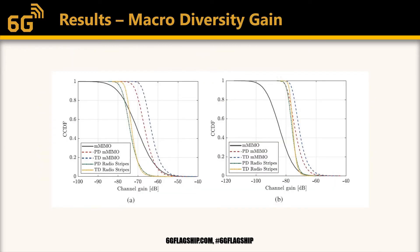In this figure, we can observe the results related to the macro diversity gain. We plot the complementary cumulative distribution function of the channel gains of the active device, considering the centralized Massive MIMO deployment, the partially distributed and totally distributed Massive MIMO deployments using a grid distribution of access points, and the partially distributed and totally distributed Massive MIMO deployments utilizing radio stripes. On the left we have the results for the typical case, and on the right we have the results for the worst case.